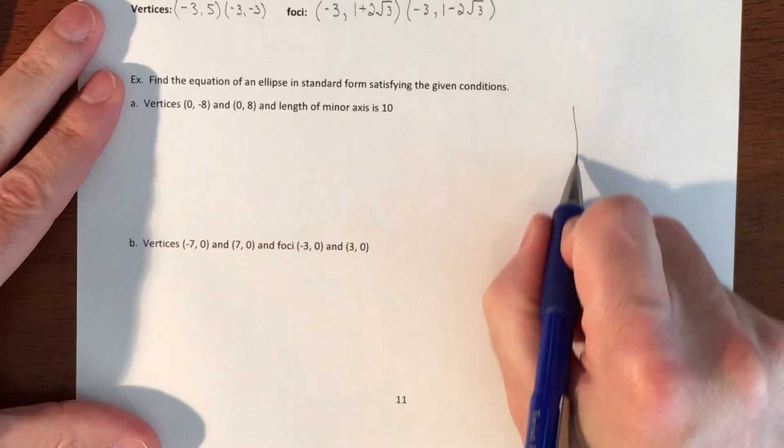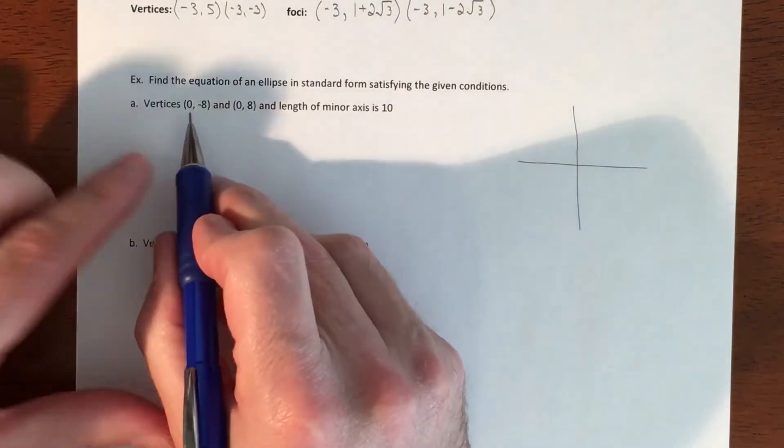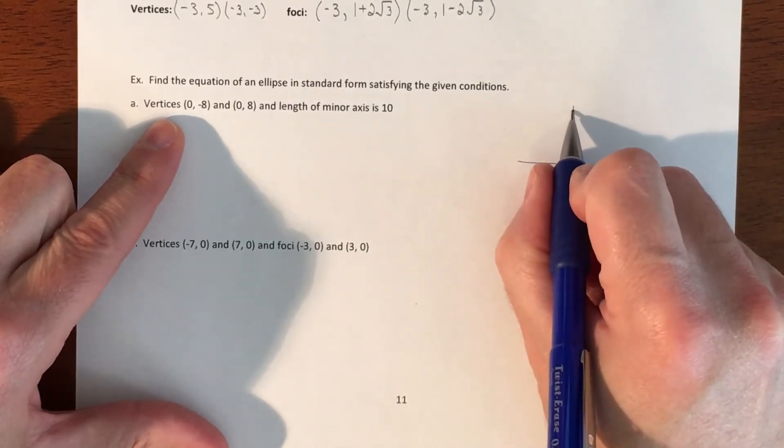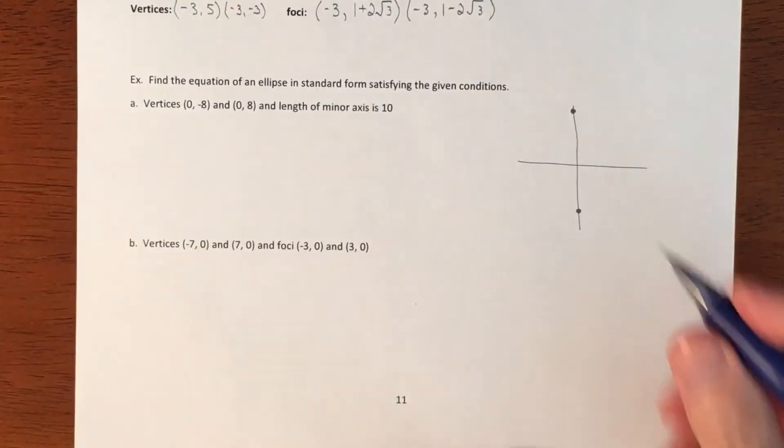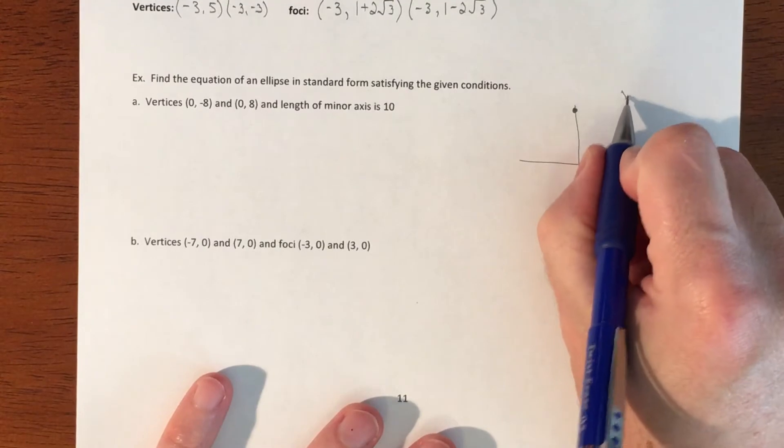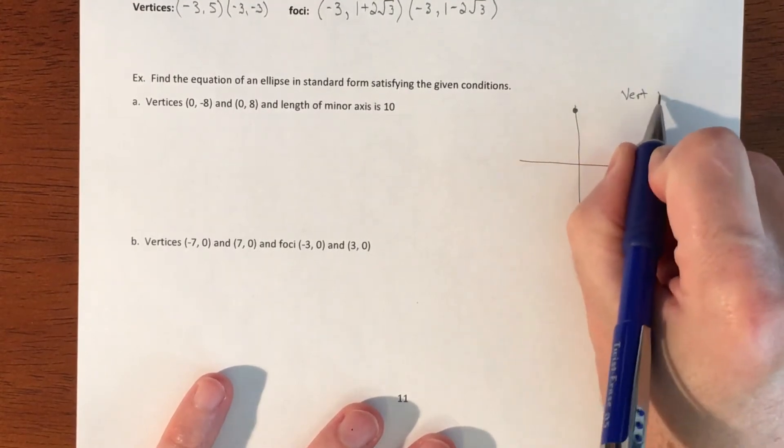We have vertices at (0, -8) and (0, 8). This tells you about your center because the vertices are on the major axis. We are about to have a vertical ellipse because of your major axis.